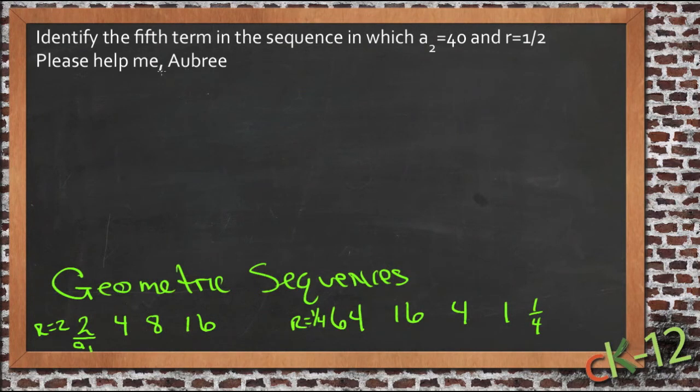Our example question up here was sent in by Aubrey, and she said she needs to find the fifth term in the sequence where the second term, a₂, is 40, and r is 1/2.